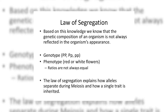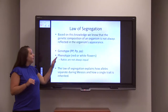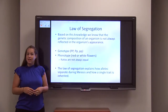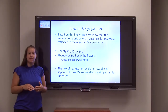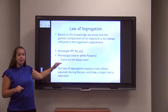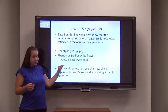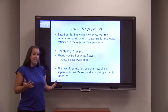Based on his conclusions, we can see that the genetic composition of an organism isn't always reflected in the organism's appearance. There are various genotypes one could have: homozygous dominant, heterozygous, or homozygous recessive. If there is a dominant allele, it often masks the appearance of the recessive allele — this appearance is reflected in the phenotype. The phenotype is the physical appearance of one's genotype; it's something you can actually see and is tangible.